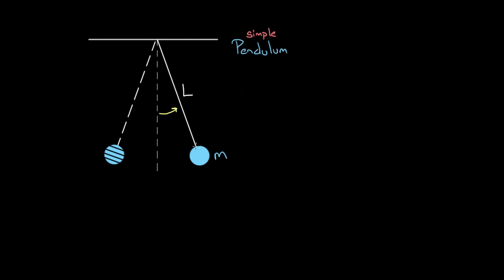What do we mean that the pendulum is a simple harmonic oscillator? We mean there's a restoring force proportional to the displacement, and that its motion can be described by the simple harmonic oscillator equation. That equation says some variable X as a function of time equals some amplitude times cosine of two pi divided by the period times the time, with an optional phase constant.